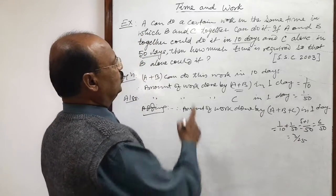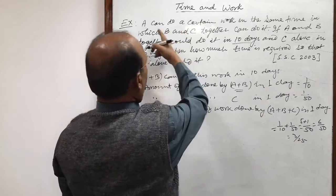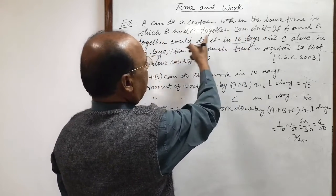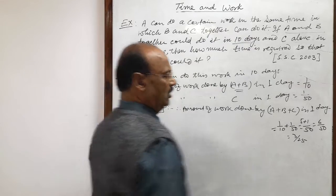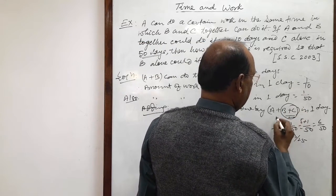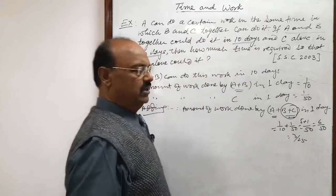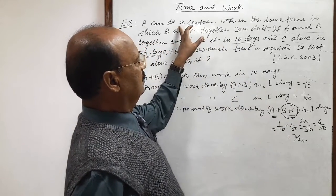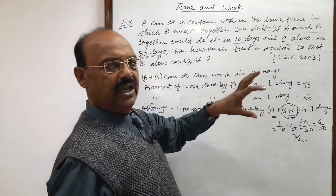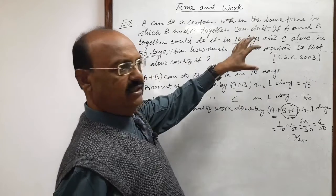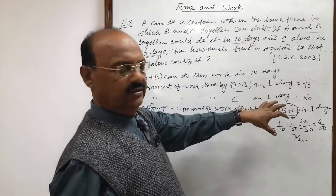Now we will use this first statement. A can do a certain work in the same time in which B and C together can do it. So the amount of work done by B plus C will be equal to amount of work done by A. Because A takes the same time for doing this work which B plus C takes.